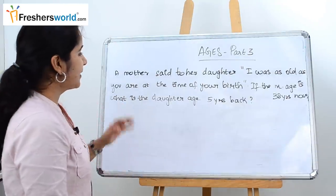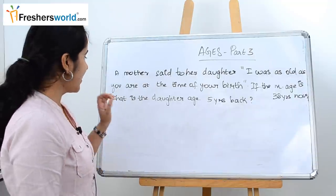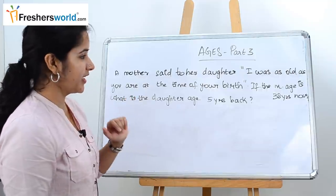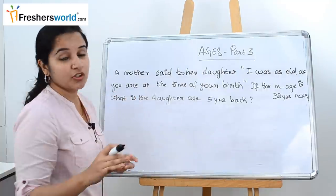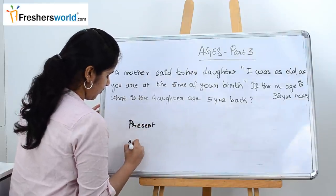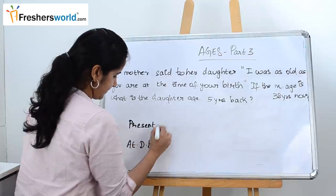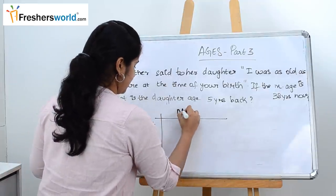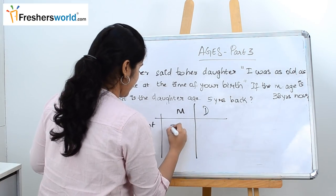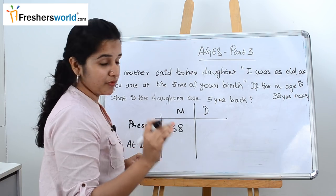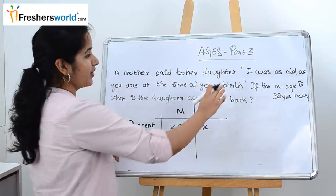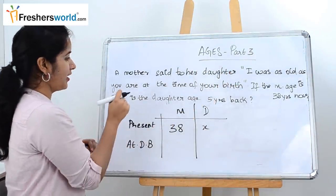Let's go to the next question. A mother said to her daughter: 'I was as old as you are at the time of your birth.' If the mother's age is 38 years now, what is the daughter's age five years back? Let's set up a table with present ages and ages at the time of the daughter's birth. Currently, the mother's age is 38 years. We don't know the daughter's age, so let's call it x.